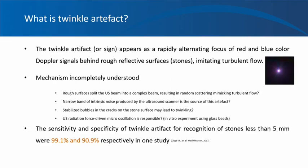So what is a twinkling artifact? Rough reflective surfaces such as stones and calcifications emit a turbulent flow signal on color Doppler and appear as rapidly alternating foci of red and blue color signals — something like a twinkling star. This is called the twinkling sign or twinkling artifact and helps us identify stones in Doppler mode. The mechanism is incompletely understood, but it could be that rough surfaces split the ultrasound beam into a complex beam resulting in random scattering which mimics turbulent flow, or a narrow band of intrinsic noise produced by the ultrasound scanner could be the source of the artifact.